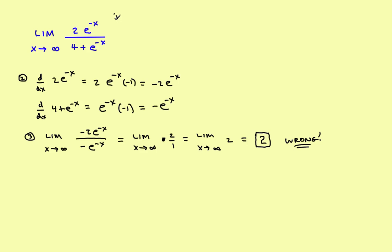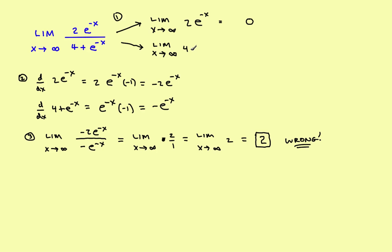If you had actually done step 1, here's what it would look like. You'd find the limit as x approaches infinity of 2e to the negative x. That's like having 2 over e to the positive x. As x goes to infinity, 2 over e raised to infinity goes to 0, so the numerator is going to go to 0. Now let's test the denominator: the limit as x approaches infinity of 4 plus e to the negative x. You can think of e to the negative x as 1 over e to the positive x, so as x goes to infinity, that term goes to 0, giving you 4 plus 0, which is 4.